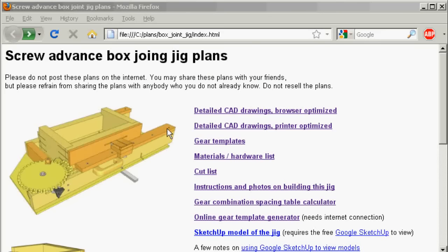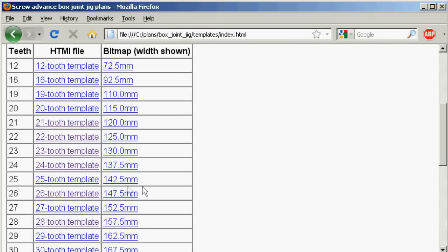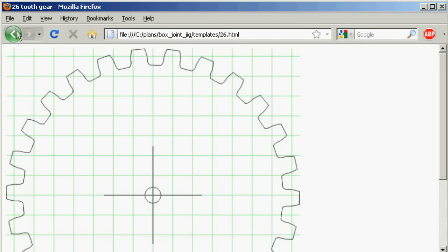Or if you're using my screw advance box joint jig version 2 plans, you can just go into the plans, click where it says templates, scroll down to the right size gear that you want, click on that, and then just print that out.